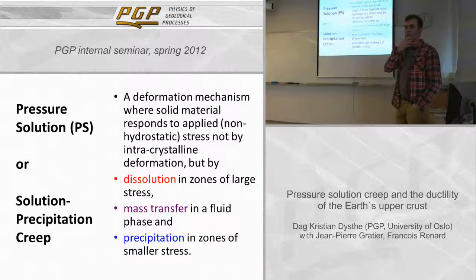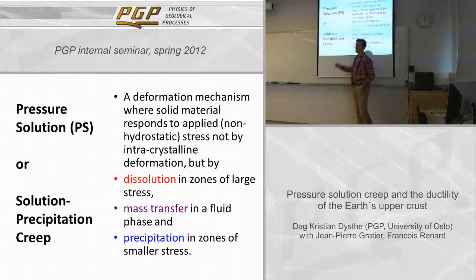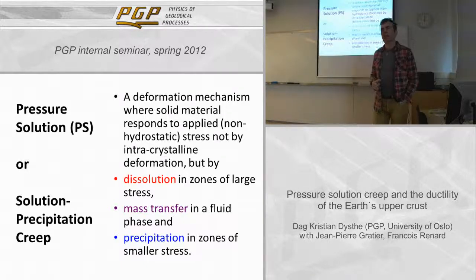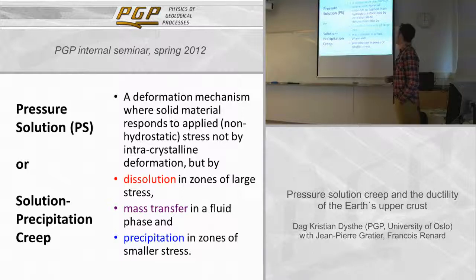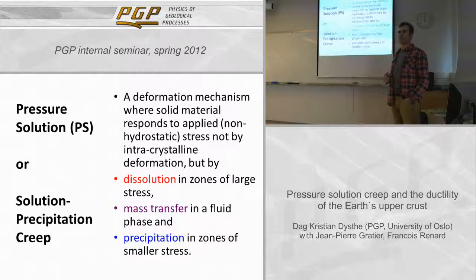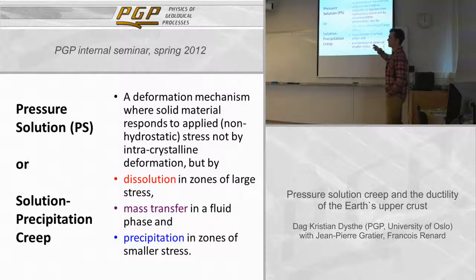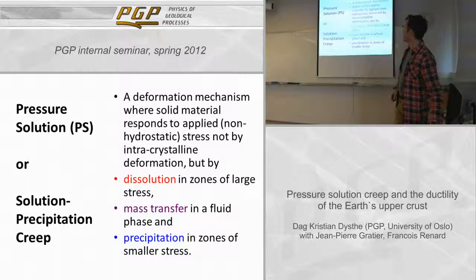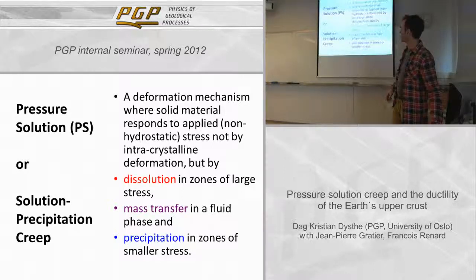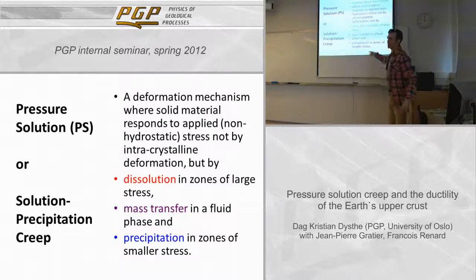Pressure solution - sometimes also called solution precipitation creep - is a deformation mechanism that's important in several parts of the Earth's crust. It operates by dissolving under stress, and involves diffusive mass transport in liquids and precipitation in regions of smaller stress. Several authors prefer the name solution precipitation creep because it says more about what actually goes on.